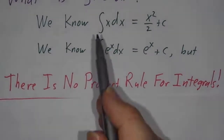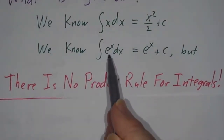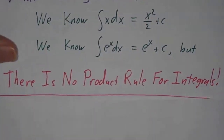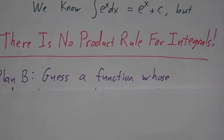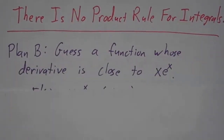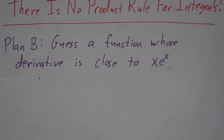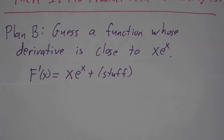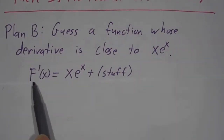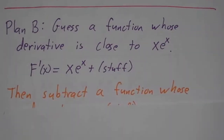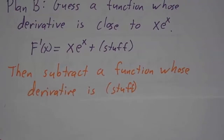Just because you know the integral of x and the integral of e to the x doesn't mean you know the integral of x times e to the x. So we need plan B. Our plan B is to guess a function whose derivative isn't exactly xe to the x, but just close to xe to the x. If we can guess a function — call it capital F of x — whose derivative is xe to the x plus some other stuff, then we just subtract off a function whose derivative is the other stuff.